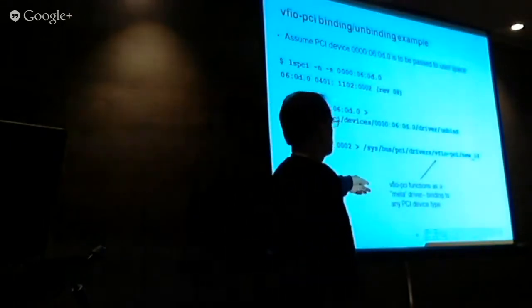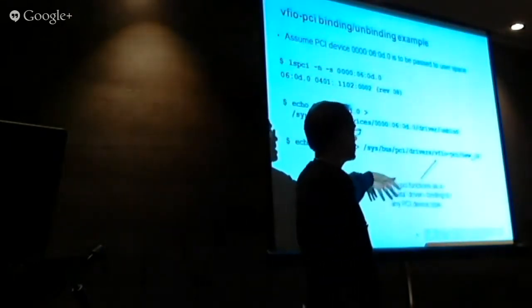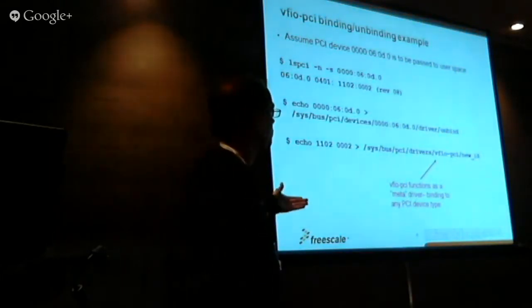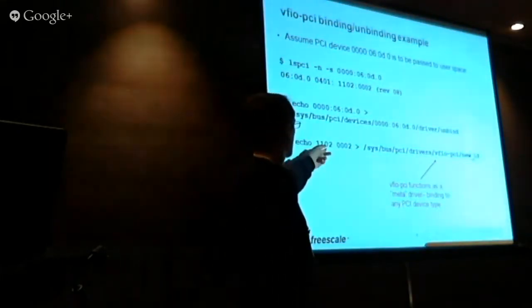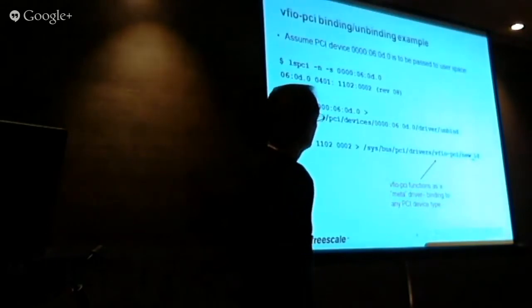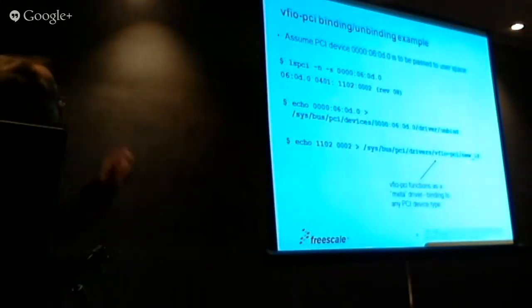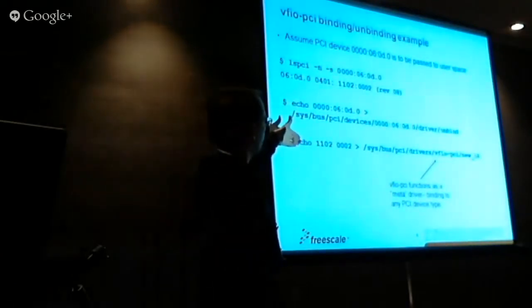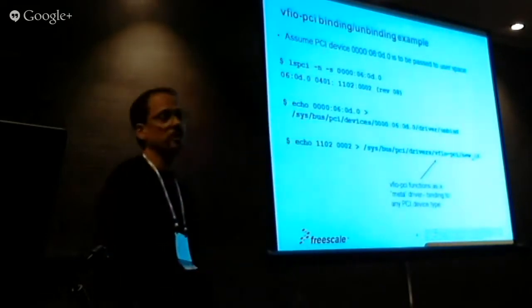Essentially, VFIO functions as a meta driver. You can bind any device type to it, and the way you tell it what types to support is through the SysFS mechanism. You unbind, you bind it, and at this point now VFIO owns the device and can be exposed to user space through file descriptors.